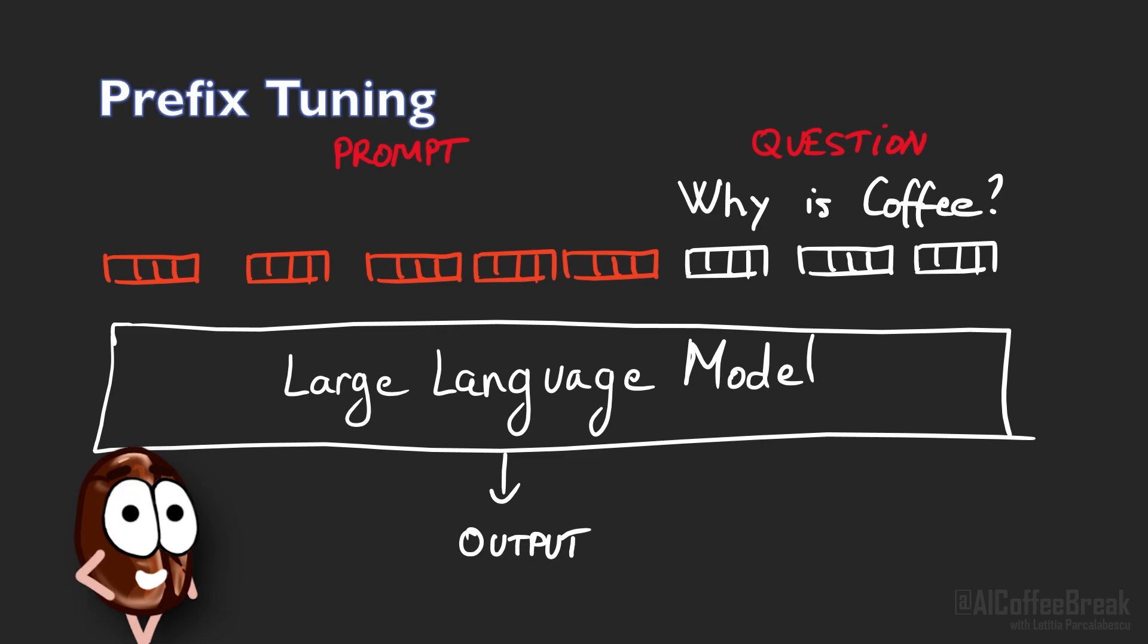Compared to prompt engineering, where the vectors represent words, in prefix tuning they do not. The problem with prefix tuning is that it occupies part of the sequence length and reduces the size of the effective input, just like with prompting. Also, prefix tuning is difficult to optimize and the number of trainable parameters is hard to choose.